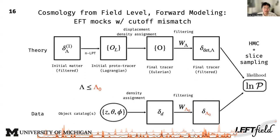How do we generate the simulation data? We use the LFT-field framework itself with a twist. We typically generate simulations at a higher cutoff lambda_0 and use a lower cutoff lambda in the analysis. This cutoff or lambda mismatch mimics the real-world scenario where galaxy formation typically involves density fluctuations at scales higher than the cutoff scale used in the analysis.